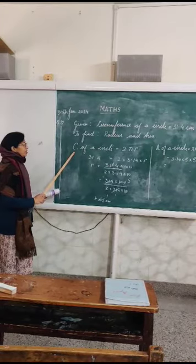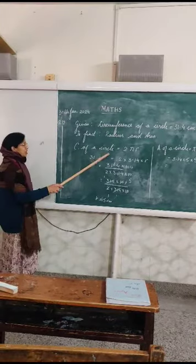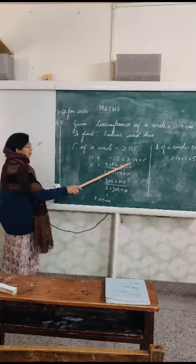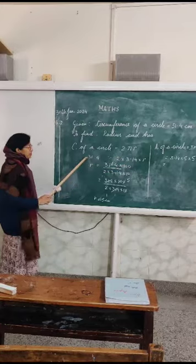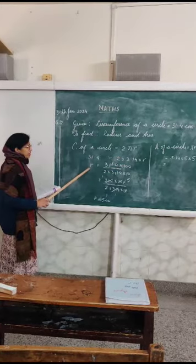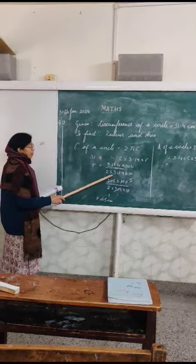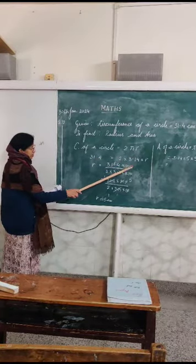As we know, the formula for circumference of a circle is 2πr. We know the circumference and the value of pi, so we put the values in the formula and find that radius equals circumference divided by 2 times 3.14.